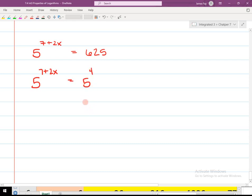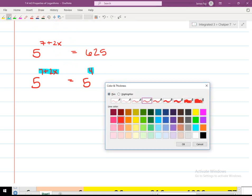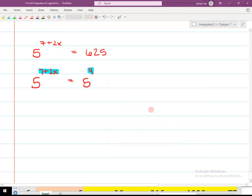Now because the bases are the same, what can I say about those exponents? Bases are the same, exponents have to be the same. They're comparable. So 7 plus 2x is equal to 4. 2x is equal to negative 3. X is negative 3 halves.